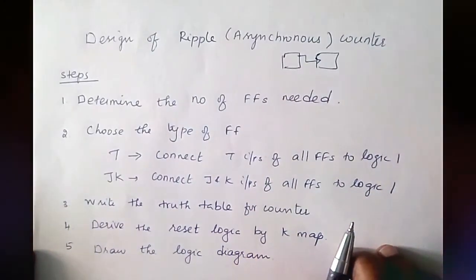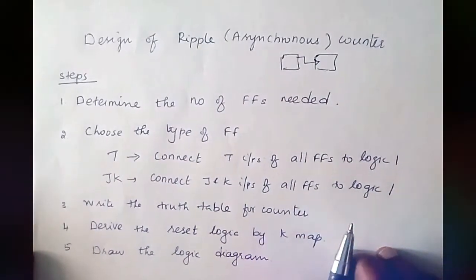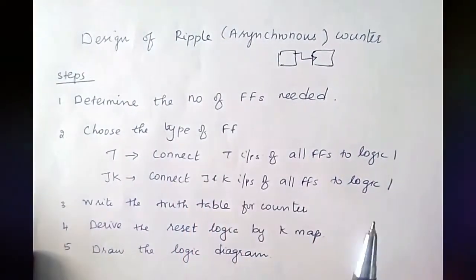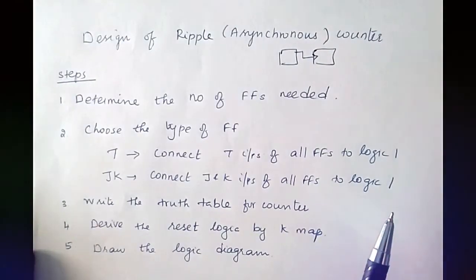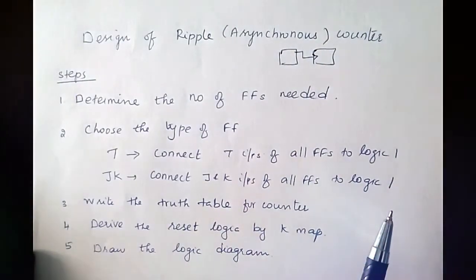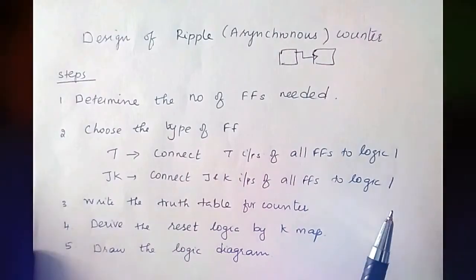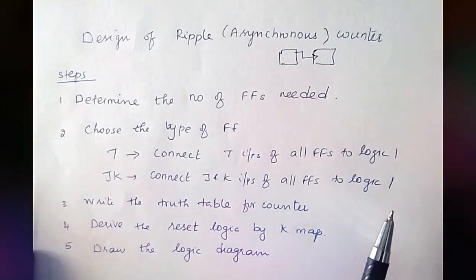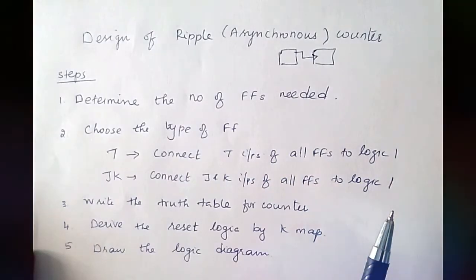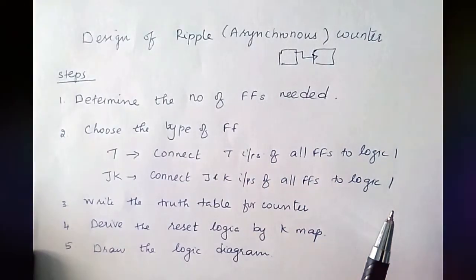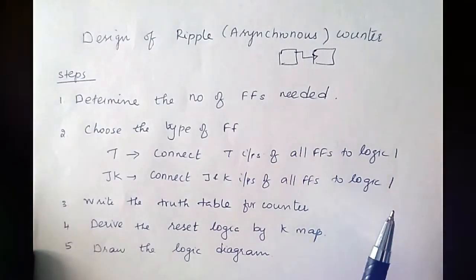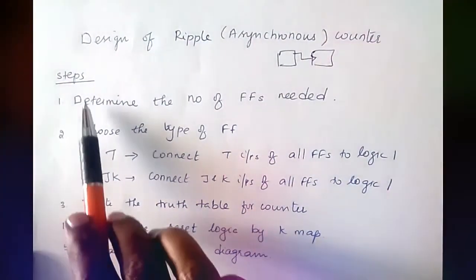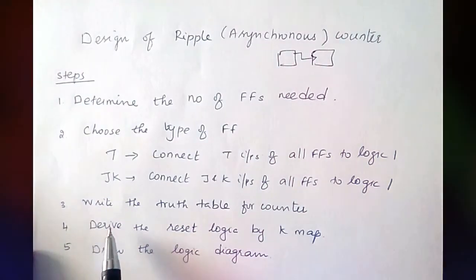In this video we are going to see how to design a ripple or asynchronous counter. An asynchronous counter consists of a series of flip-flops, and the output of each flip-flop is connected to the clock input of the next flip-flop. The flip-flop holding the LSB receives the incoming clock pulse.